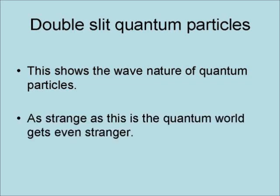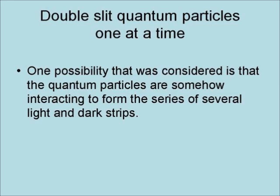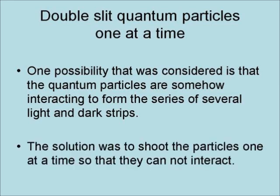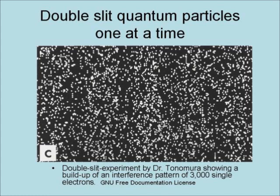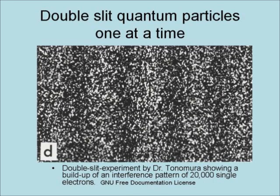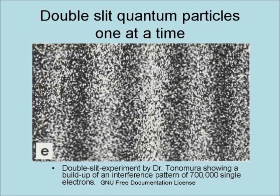The quantum world gets even stranger. One possibility is that the quantum particles are somehow interacting with each other to form the interference pattern. The solution was to shoot the particles one at a time so they cannot interact. Here are the results showing the buildup of an interference pattern of 100, then 3,000, then 20,000, and finally 700,000 individual electrons.